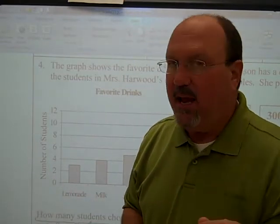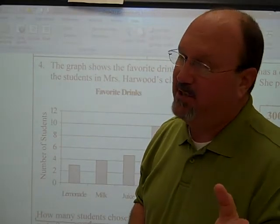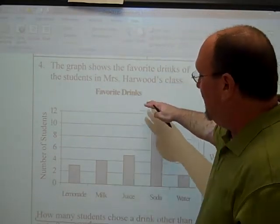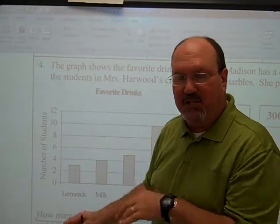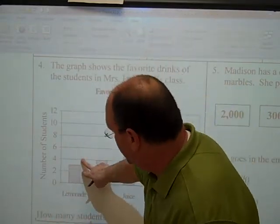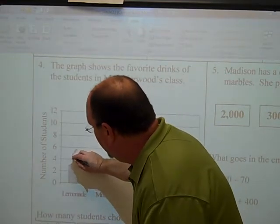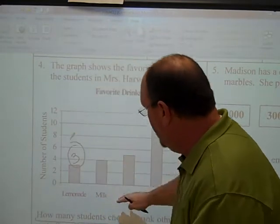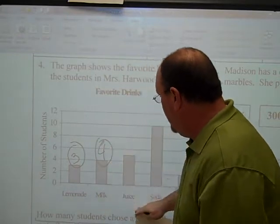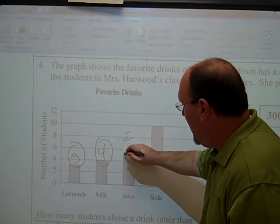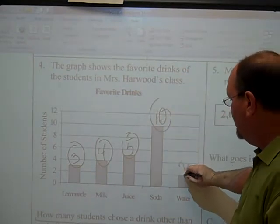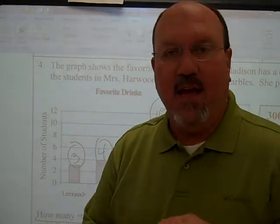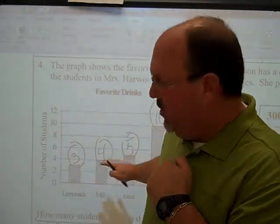Label, label, label — like my Aunt Mabel, and I really do have an Aunt Mabel. So what we want the kids to do is label each of these bar graphs so that they can go through and physically touch it. It gives a little more time for their brain to process what's going on. So lemonade looks like it's between 2 and 4, and of course that would be 3, so they put a label up there. Milk looks like that's 4. Juice is between 4 and 6, and that's got to be 5. Soda is all the way up here at 10, and water is at 2. So now we're labeled, and that gives us the information — we don't have to go back and look at it again.